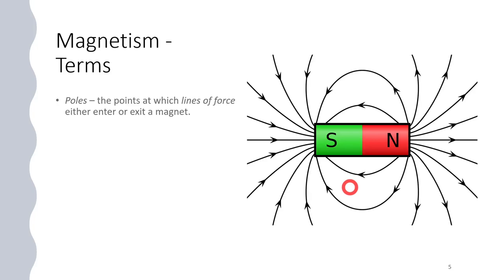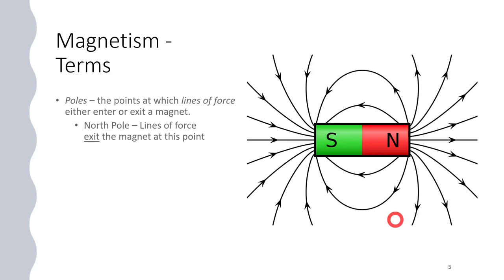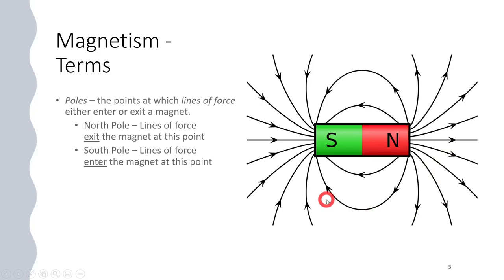The poles of a magnet are labeled north and south. Sometimes north is red and south is blue - in this case they're depicting north as red and south as green. The north pole is where the lines of force exit the bar magnet. You can see these black lines are the lines of force leaving the magnet, and conversely, they return back to the south pole. It is a looping action.